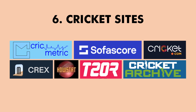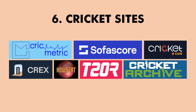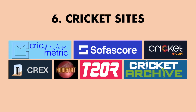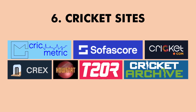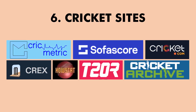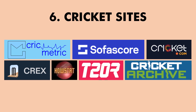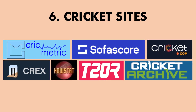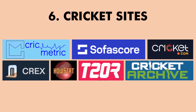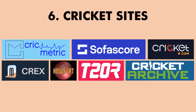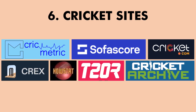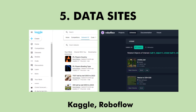Number 6 is cricket sites. Beyond the well-known Cricinfo and Cricbuzz, there are others worth checking because each provides different kinds of statistics. For example, Cricmetric has matchups data, Cricket Archives has older data, T20R by BigBashdBoard.com gives player rankings, and Cricket.com and Fastscore also have different in-depth statistics.